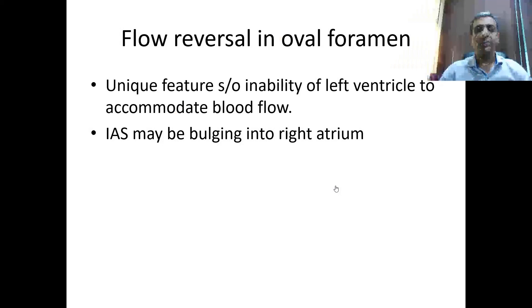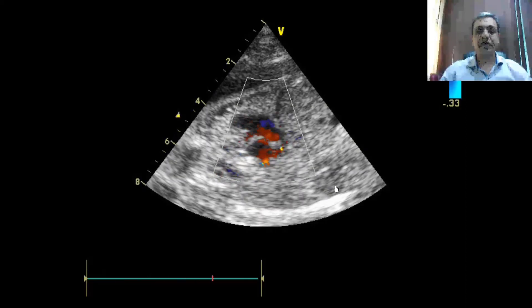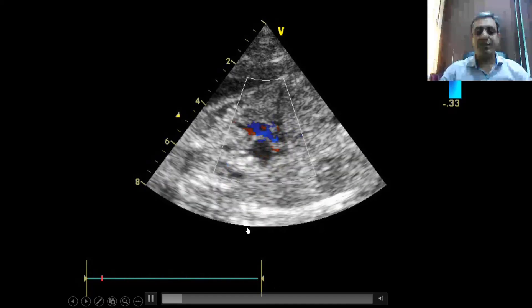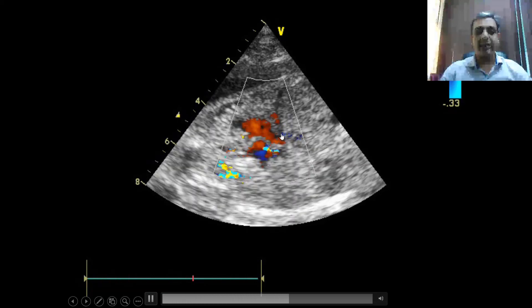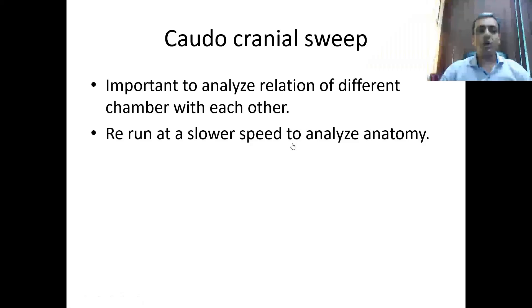Flow reversal in the foramen ovale suggests inability of the left ventricle to receive blood, with increasing left atrial pressure causing left-to-right flow across the foramen ovale, and the interatrial septum may be bulging into the right atrium. Normally the interatrial septum bulges into the left atrium. In this case, there is flow reversal from the left atrium into the right atrium with the interatrial septum bulging into the RA. Also visible are the superior vena cava and inferior vena cava.